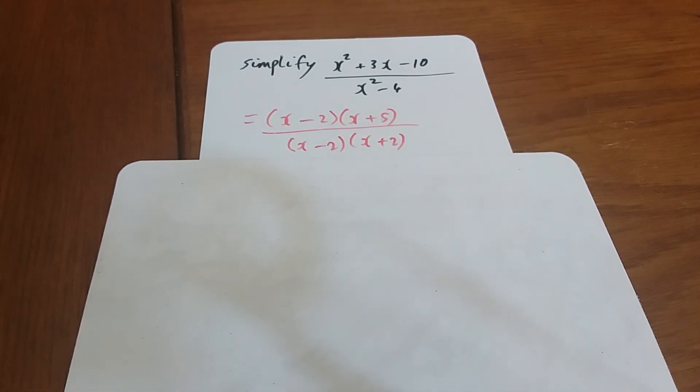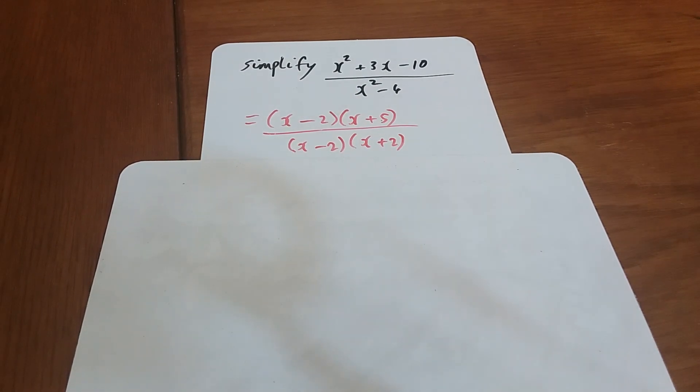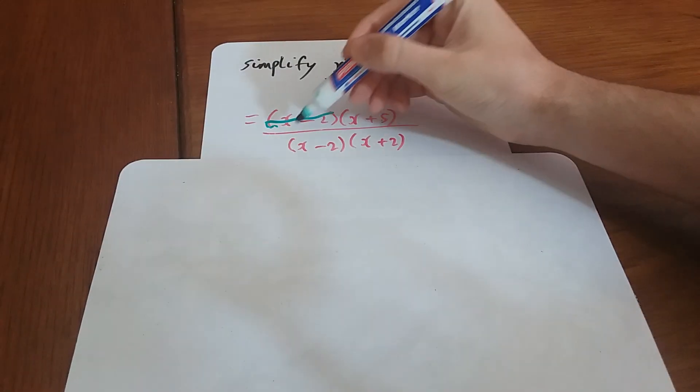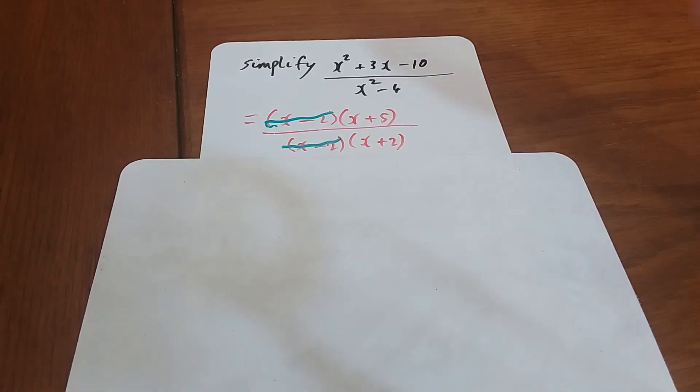And then the bottom, it was a difference of two squares. Notice that on the top and on the bottom here we have some factors in common. We have x minus 2, so if I cancel that with that, it's like we're dividing the top and the bottom by the same thing.